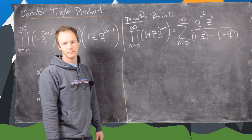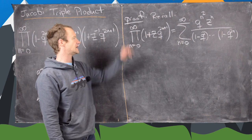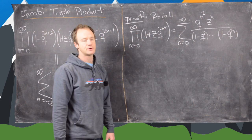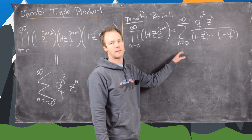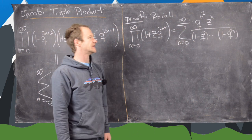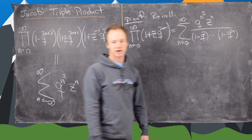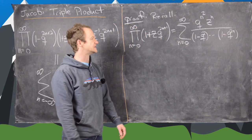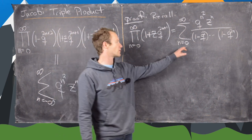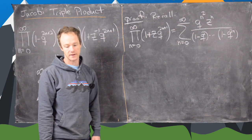This gives us a great starting point for our proof. We have the product from n equals 0 to infinity of 1 plus z times q to the 2n plus 1, equal to the sum n equals 0 to infinity of q to the n squared z to the n over this ascending product 1 minus z squared all the way up to 1 minus z to the 2n, where we take the n equals 0 term to be just 1.